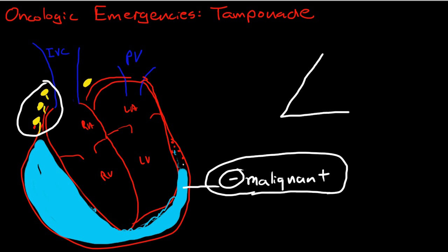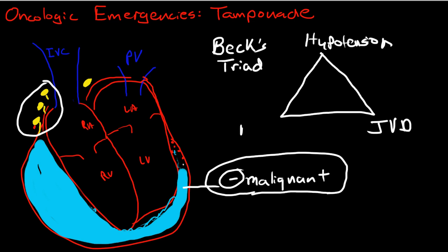A pericardial effusion isn't always an emergency. It becomes an emergency when it develops into tamponade. We know it's tamponade by the symptoms known as Beck's triad, which is hypotension, jugular venous distension, and muffled heart sounds.